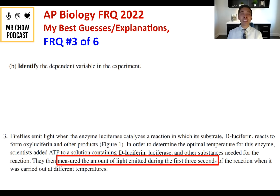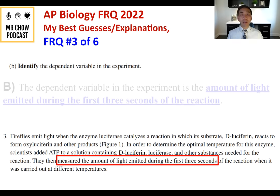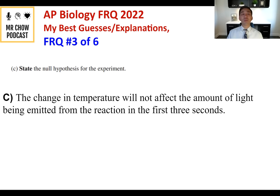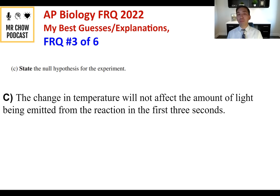Question 3B: Identify the dependent variable. The dependent variable is the amount of light emitted during the first three seconds of the reaction. Question 3C: State the null hypothesis. The null hypothesis is: the change in temperature will not affect the amount of light emitted from the reaction in the first three seconds.